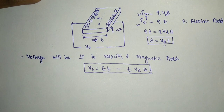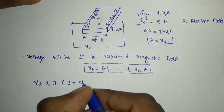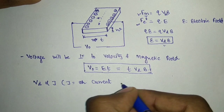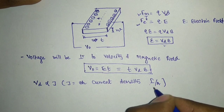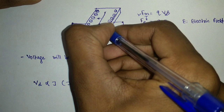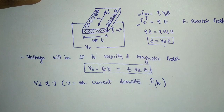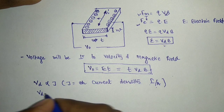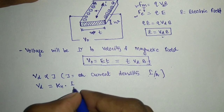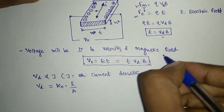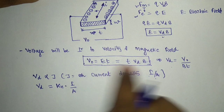But still we are unaware about the drift velocity. In order to calculate the drift velocity, we use the current density concept. VD is proportional to J, where J is the current density flowing from the conductor, given by I/A. So VD = Kh·(I/A), where Kh is the Hall effect constant used to remove the proportionality. And VD can be given by V0/(B·T). I will replace it to get V0/(B·T) = Kh·(I/A).